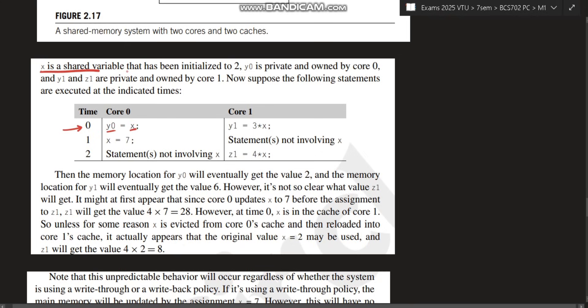Now, at time 0 seconds, x is assigned to y0. That means x value is 2, so 2 will be assigned to y0. Y0 value will be equal to 2. Next is core 1 at the same time - what's happening? 3 into x, which is 3 into 2, equals 6. So y1 value is 6. In next time 1, what happens? x becomes 7. And here some other statements are happening. In time 2, what happens? Some other statements are happening here, but here z1 is equal to 4 into x.